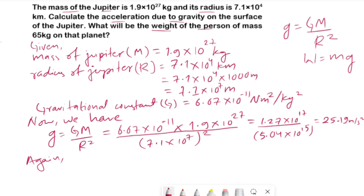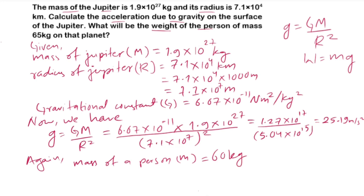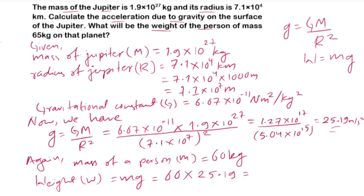We also have to calculate the weight of a person on Jupiter. Mass of the person, small m, is given as 60 kg. Using the formula W equals mg — mass is 60 and acceleration due to gravity is 25.19 — the multiplication gives us 1511.4 Newtons, which is the weight of that person on Jupiter.